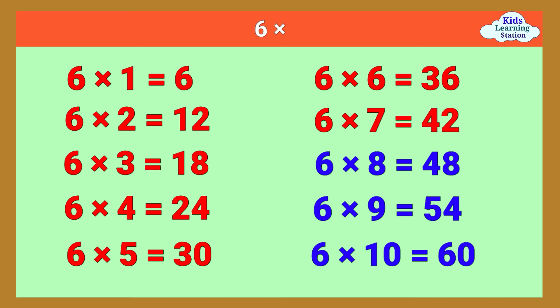Six times eight equals forty-eight. Six times nine equals fifty-four. Six times ten equals sixty.